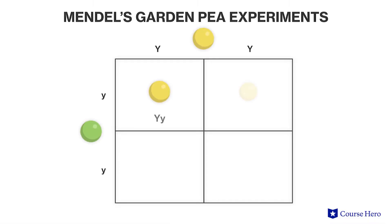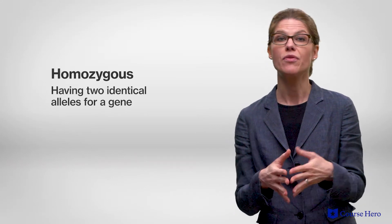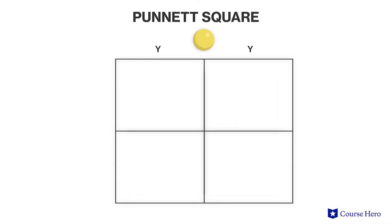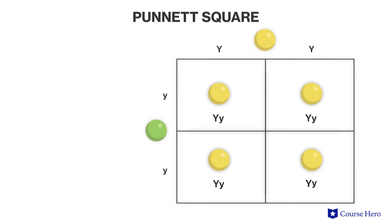Let's use a Punnett square to look at one of Mendel's crosses, which looked at the color of peas. In this cross, the letter Y is used to represent the color of the peas. The dominant trait is yellow and is given an uppercase Y. The recessive trait is green and is given a lowercase y. The parents in this cross are each homozygous, either for the dominant trait or the recessive trait. The alleles of one parent are listed individually across the top, while the alleles of the other parent are listed individually down the left side. A Punnett square can then be used to predict the offspring of this cross. This generation is referred to as the first generation, or F1, and their phenotype would be yellow and the genotype would be big Y, little y.